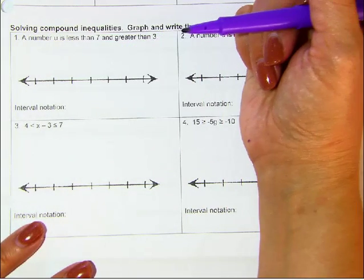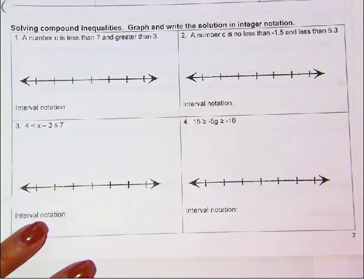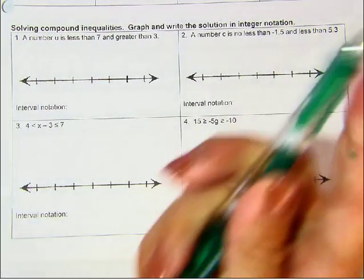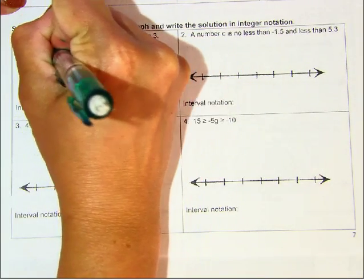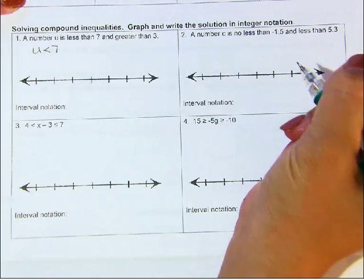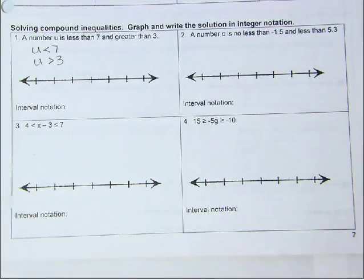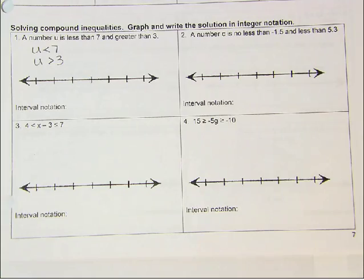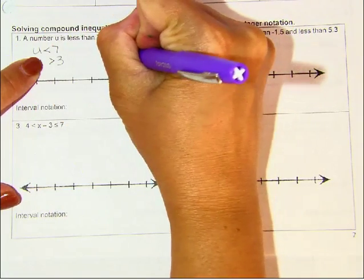This one tells me a number U is less than 7 and greater than 3. So that tells me U is less than 7, and it tells me U is greater than 3. It gives me these two inequalities and I'm going to put them together as one compound inequality. I like to write the bigger number on the right, so I'm just going to leave this inequality the same: U less than 7.